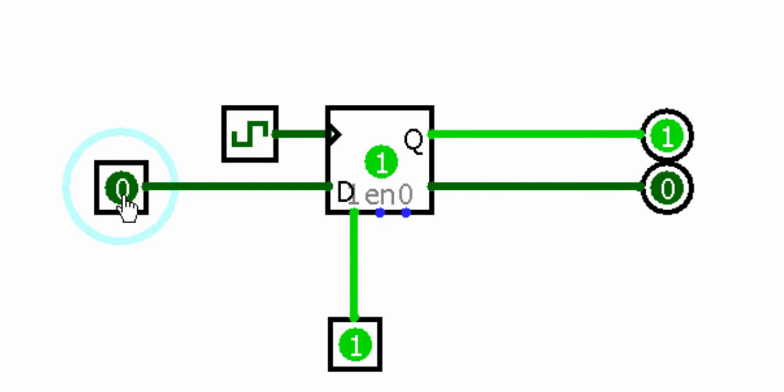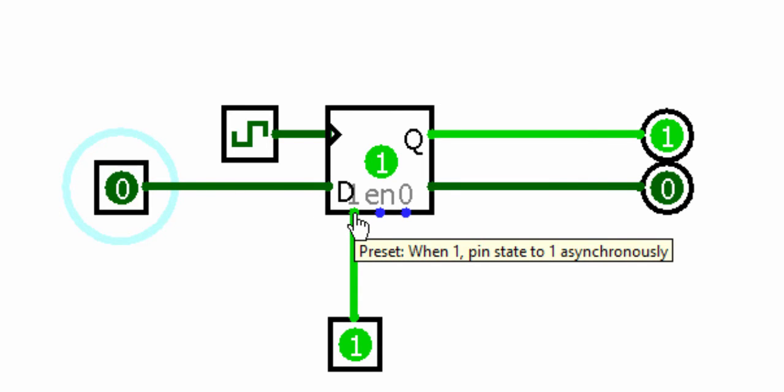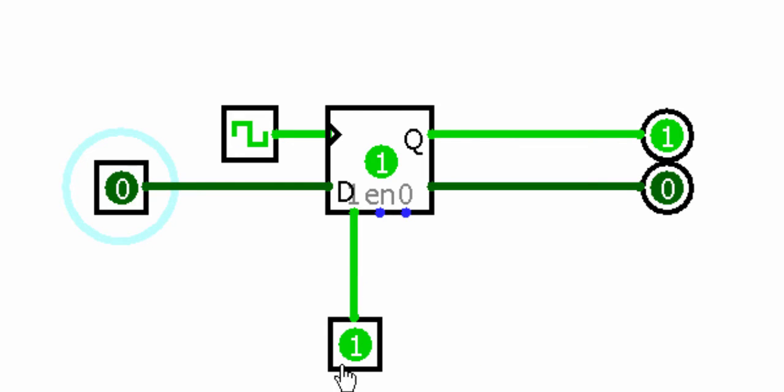Yeah. See, now it's not changing. So what was its name? It's a preset. So it's presetting it to a one no matter what. There's nothing I can do. It's going to lock this thing into a one. This is the preset line.